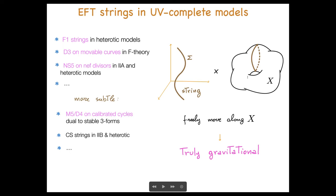A question about the D7-brane wrapped on the whole Calabi-Yau: would that be an EFT string? Yes, that's a bit more tricky, but indeed, that is already wrapping the entire internal space so it doesn't need to move around. Although in that case, their flow implies that the dilaton is going to zero and needs to be cut off. On the other hand, it also implies that the string scale metric shrinks to zero. So it's one of the examples in which we don't have full control over the internal space, which is in the regime towards which it is driven by the back reaction.